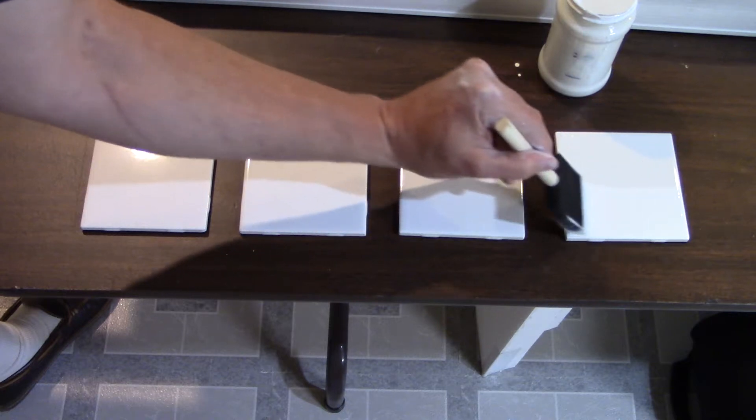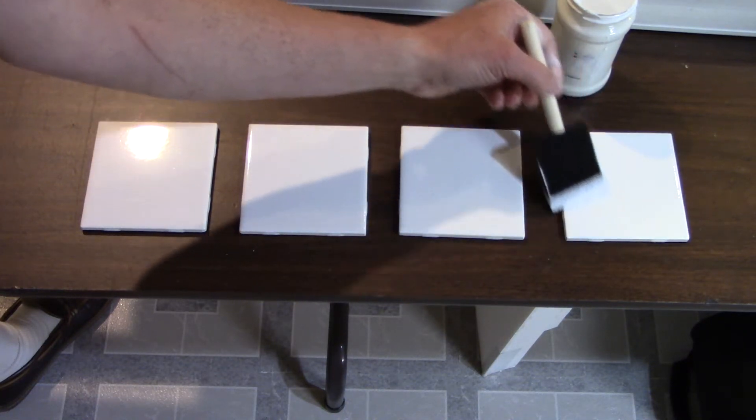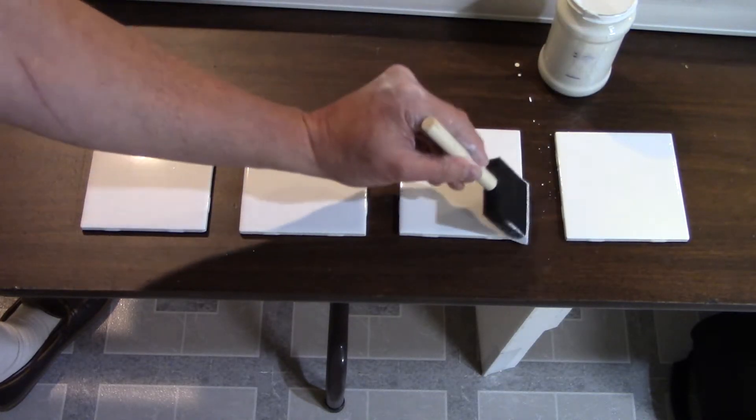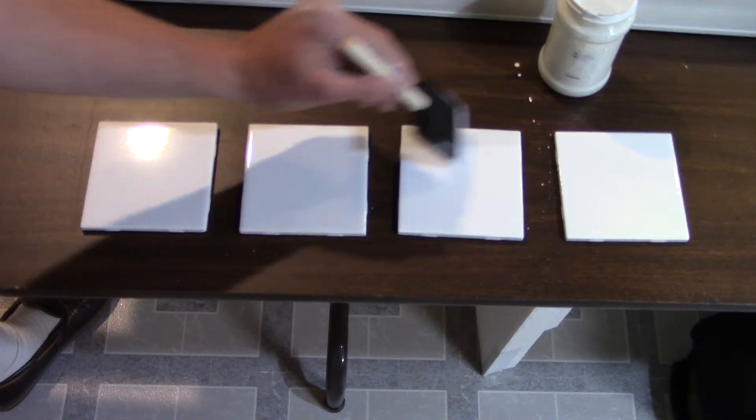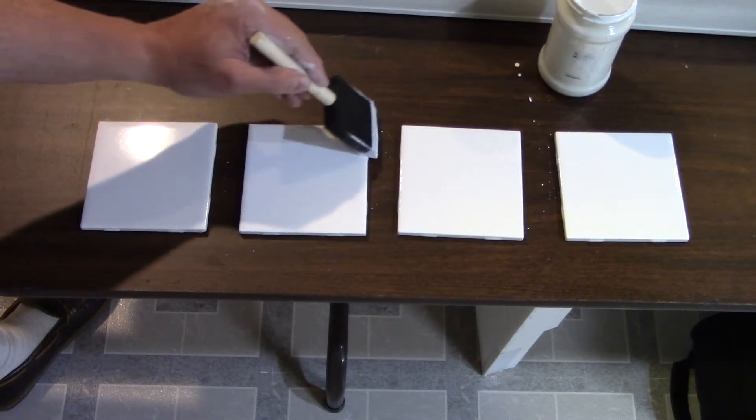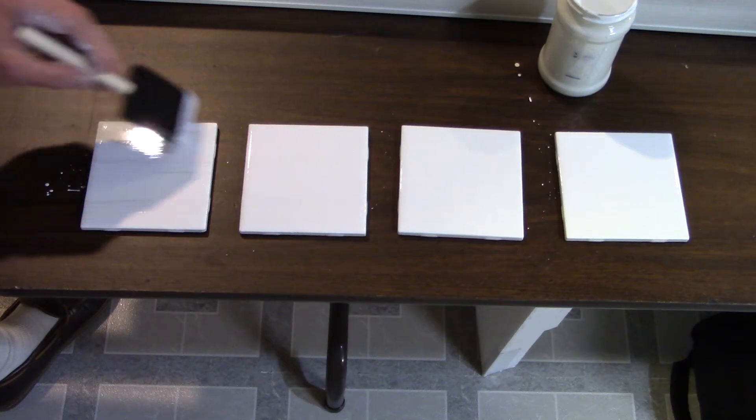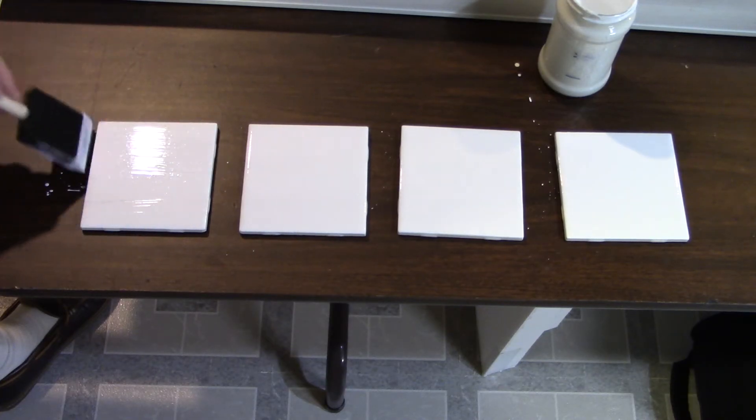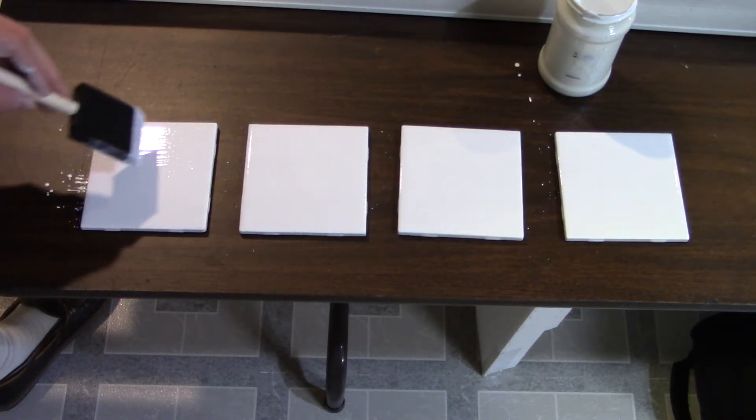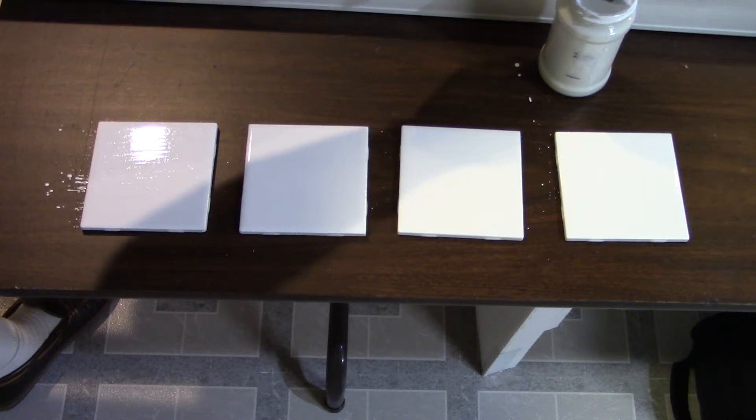This may be something that we don't need to do more than one coat. Look at that. Whoa, that is white. No wonder they use titanium dioxide for white paint. I thought the white was hard enough to see, but wow.